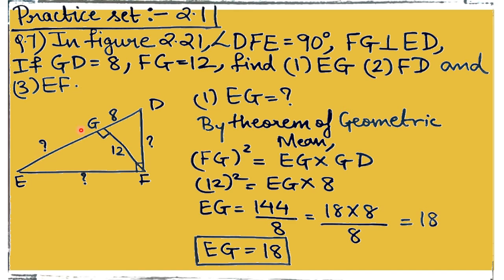By the geometric mean theorem, FG is the geometric mean of EG and GD. So FG² = EG × GD. Substituting: 12² = EG × 8, so 144 = EG × 8, giving EG = 144/8 = 18. So EG = 18.